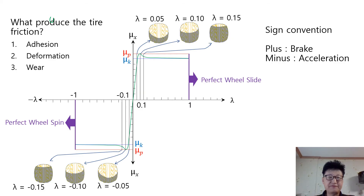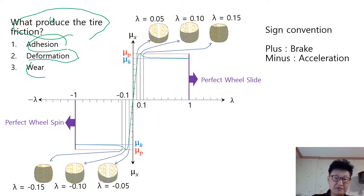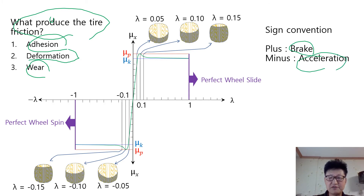This graph shows the friction coefficient in terms of slip ratio for braking and acceleration together in one place. What produces tire friction? Firstly, adhesion. Second, deformation. Third, wear. Here I used a plus sign for braking and a minus sign for acceleration.